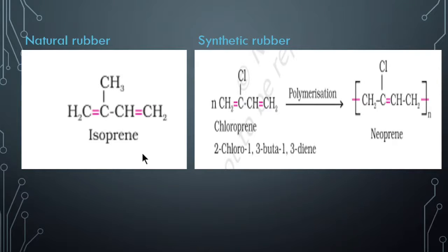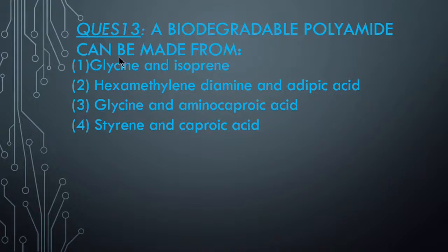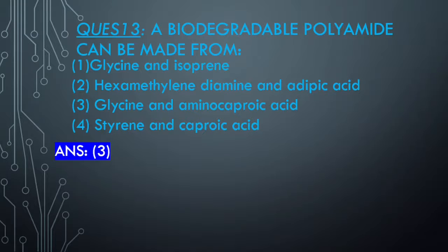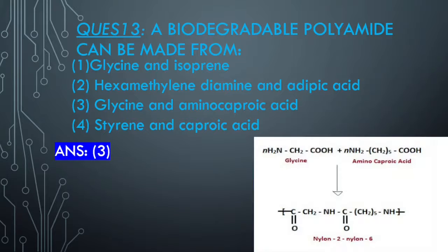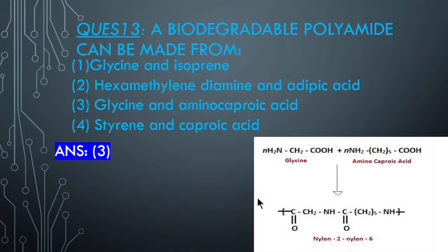Question 14: A biodegradable polyamide can be made from? The answer is glycine and amino caproic acid. There is also Nylon 2 and Nylon 6 mentioned here. Glycine - you will find this structure in the biomolecules chapter, simple structure with a carbon, H2 group. Amino caproic acid - again things are connected with organic chemistry nomenclature. If you practice those, it will be much easier.